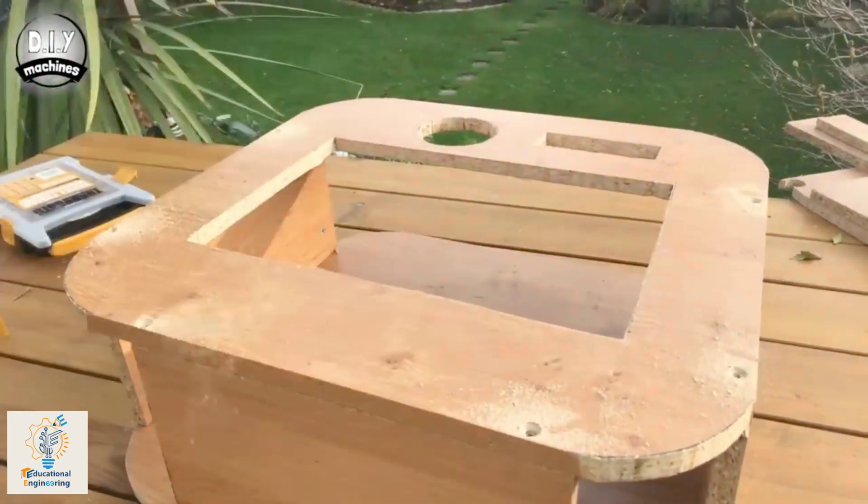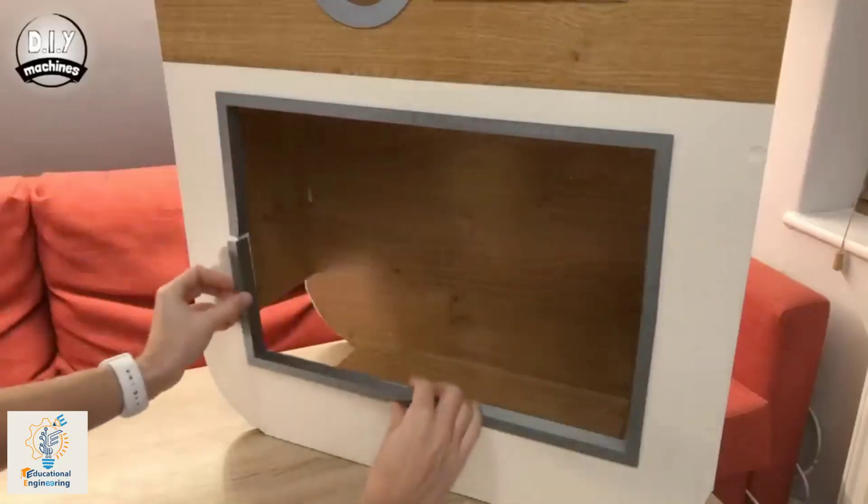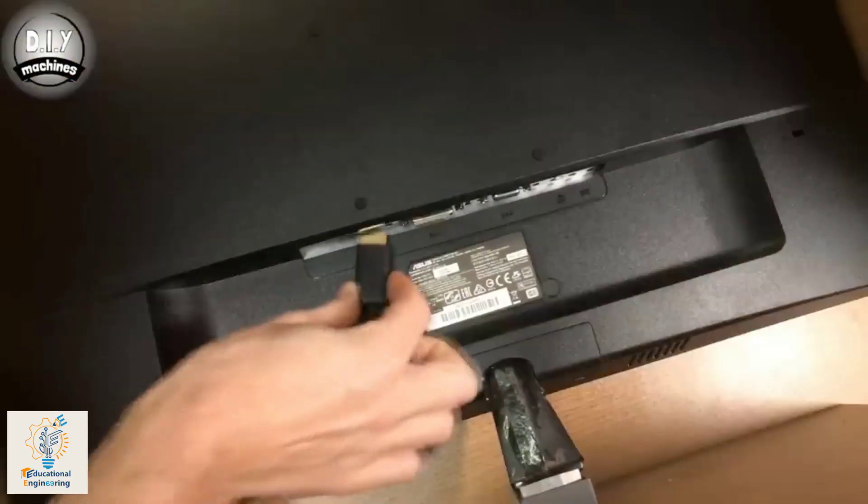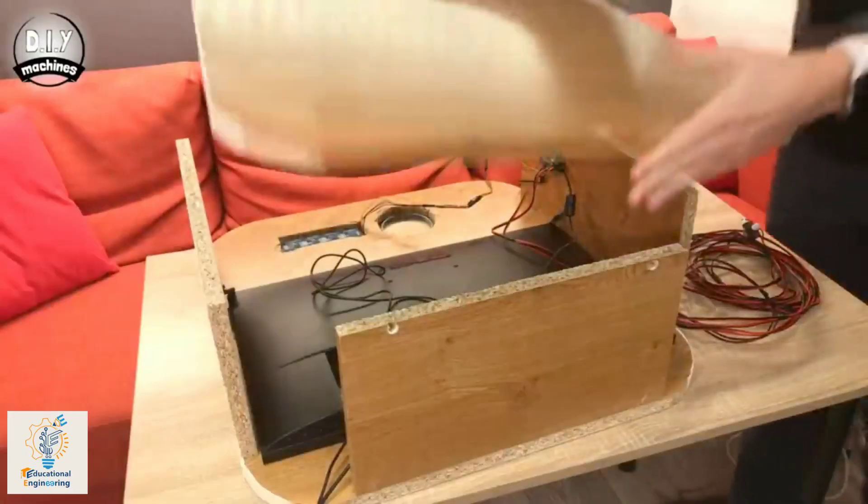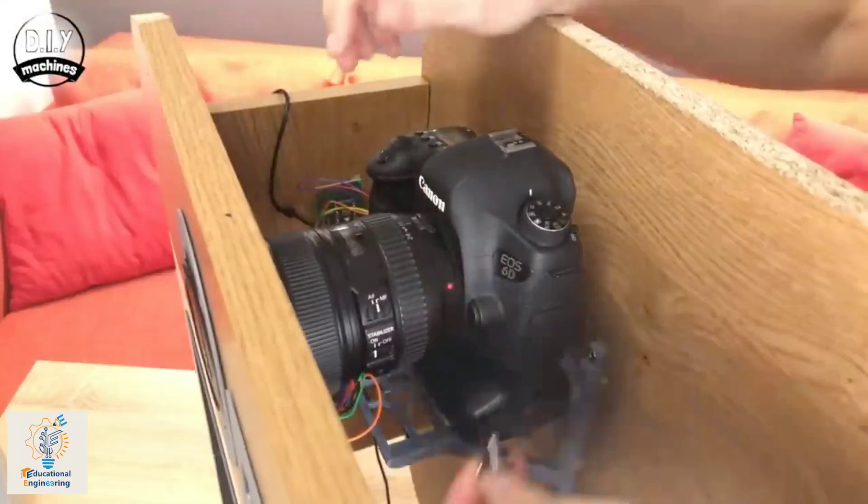The outer frame for the booth is made using wooden panels, and to cover up the rough edges, some 3D printed parts are used. The lower section contains all the electronics and a 23-inch monitor. While the upper portion holds the DSLR camera.